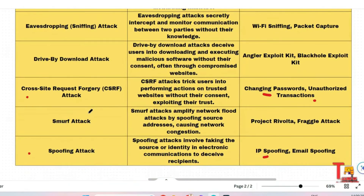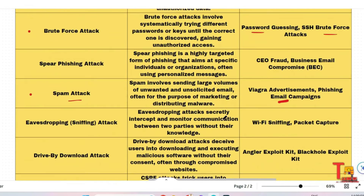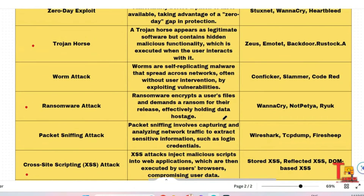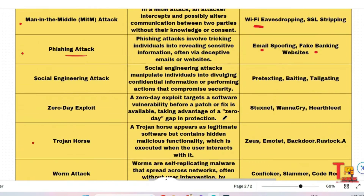Cross-site request forgery, or CSRF, attacks trick users into performing actions on a trusted website without their consent, exploiting their trust. Examples include changing passwords or transaction-related actions. Spoofing attacks are also important — mainly IP spoofing and email spoofing for this exam. Spoofing involves faking the source or identity in electronic communication to deceive recipients. Wherever marked red, these are important and asked in the exam — give priority to them first, then read the others.